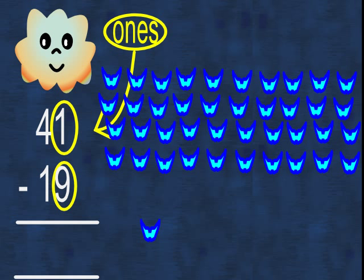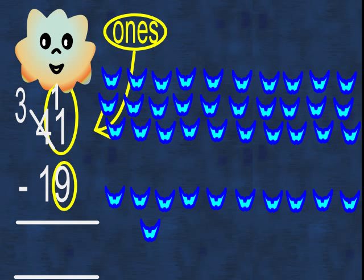We use the decomposition method to help us. We take a 10 away from the four tens in the top number and add it to the one bird to create 11 birds. Take away nine birds.